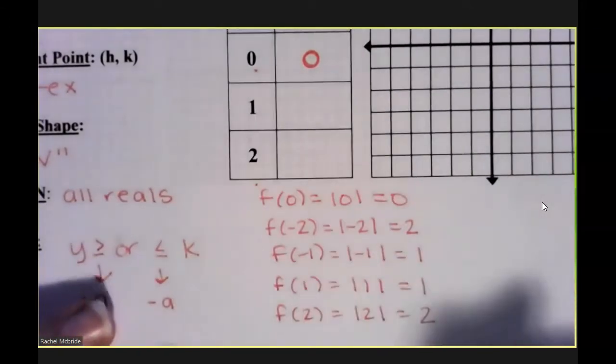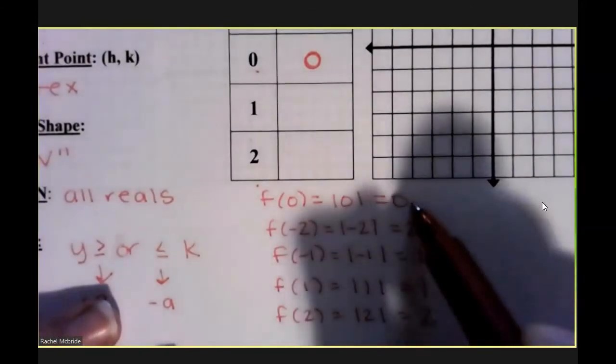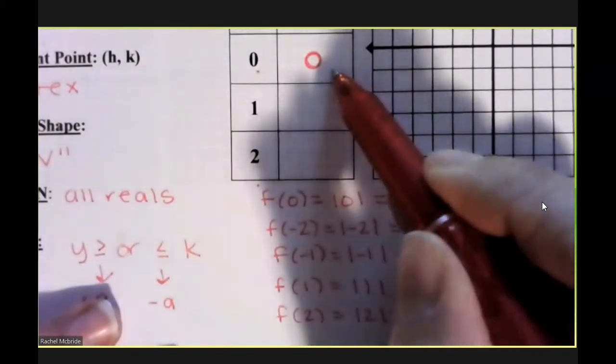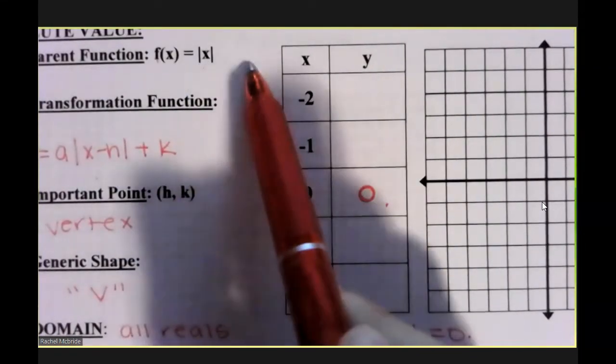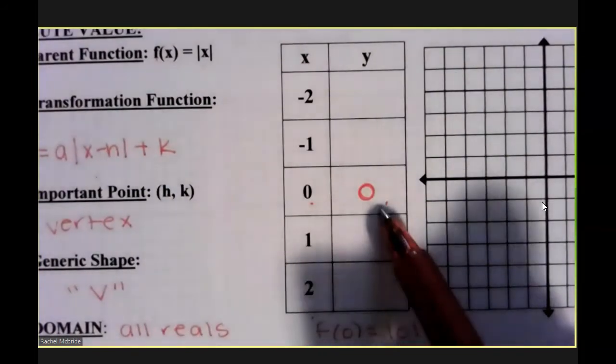So there's my five key points. Remember that the vertex is in the middle. It's h comma k. In this case, since there isn't an h or a k, my vertex is 0, 0.